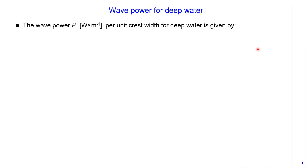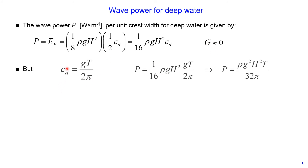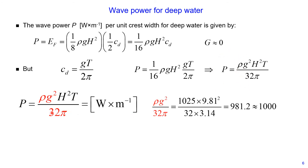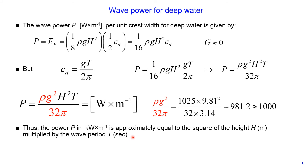In shallow water, the wave power per unit crest width is given by a simplified equation, since the group velocity simplifies because parameter G for deep water is approximately 0. The wave speed for deep water can be expressed as gravity multiplied by wave period divided by 2π. Substituting this into the equation above gives the wave power for deep water. With constant parameters — water density, gravity, and pi — substituting an approximate value of 1000, we can express wave power for deep water in kilowatts per meter. Thus, wave power for deep water in kW/m is approximately equal to wave height squared multiplied by wave period.